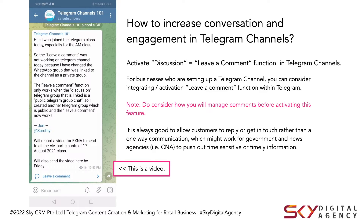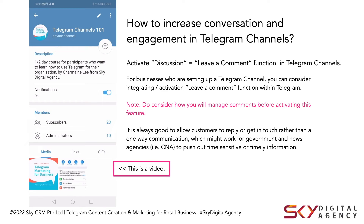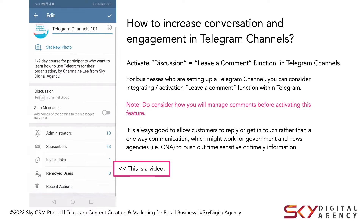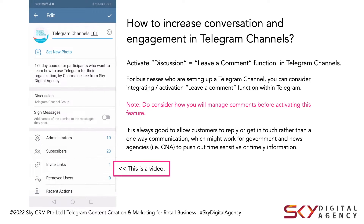First things first, tap on the Telegram channel name. For mine it's Telegram channel 101. Tap once and there are two buttons at the top right — one is the other button, just beside the three dots. So we click on Edit and you can scroll down or just tap on this option called Discussion.